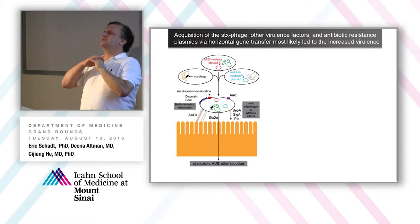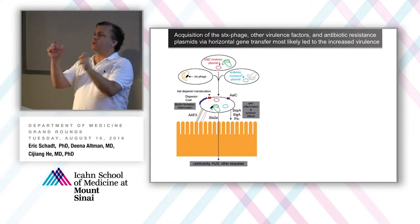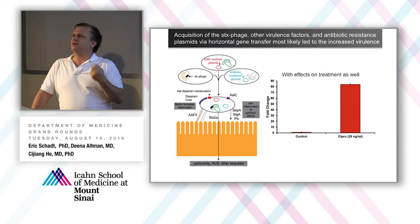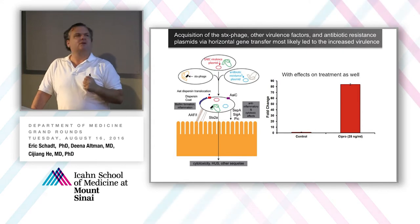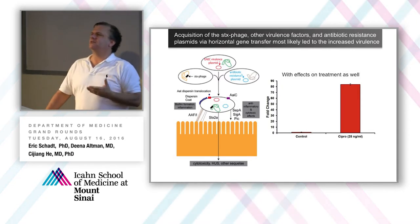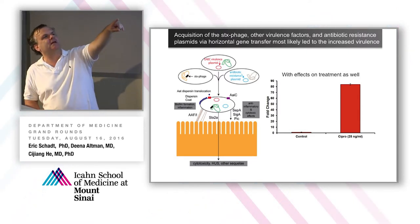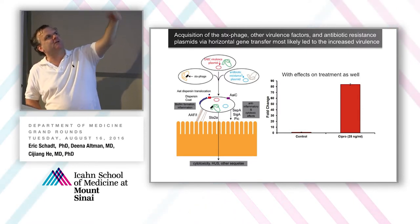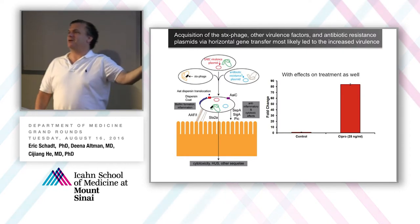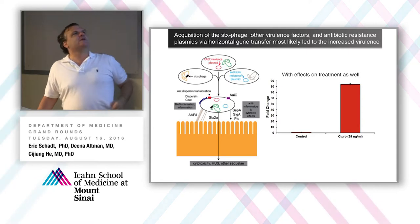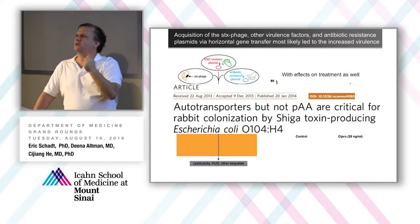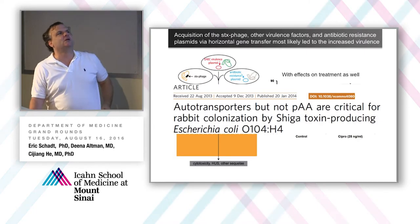We were able to piece that together because we could sequence the entire genome in real time and analyze all the pieces and their ordering. Our results also showed that if you treated this particular bug with Cipro — one of the most common treatments for E. coli outbreaks — it would actually activate the Shiga toxin-producing gene in those cells. Shiga toxin was 70-fold increased over the control in the presence of Cipro. From this, guidance came out that you shouldn't treat this particular outbreak with Cipro because you'll just make people sicker.